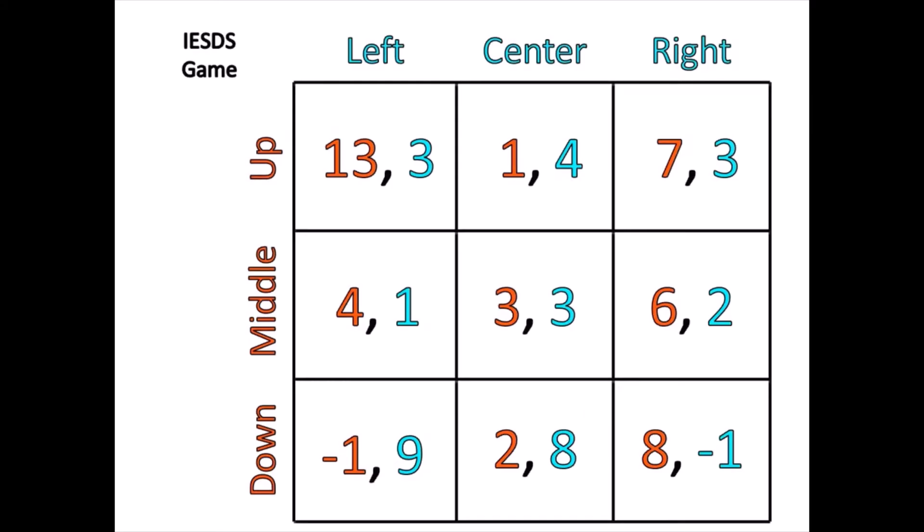We're going to use something called iterated elimination of strictly dominated strategies. This is a much more complicated game than what we saw in the Prisoner's Dilemma. Each player has three strategies. Player 1 has up, middle, down. Player 2 has left, center, right. And that leads to nine different outcomes.